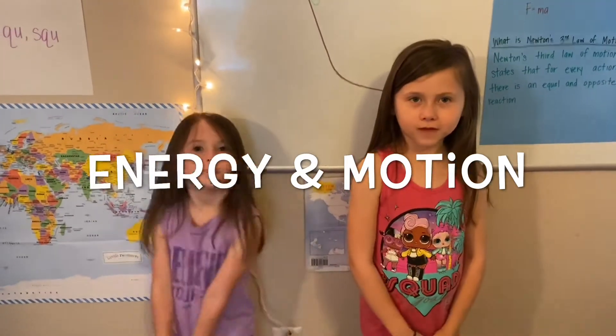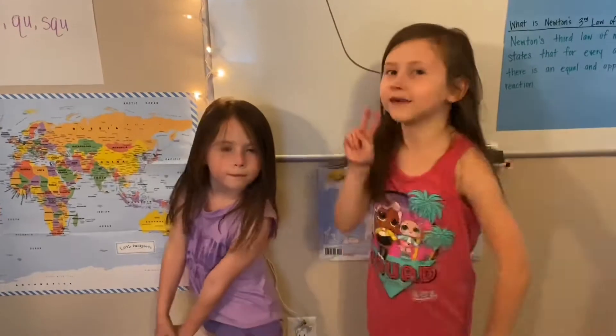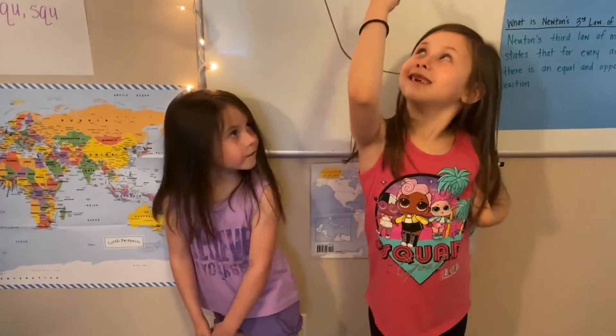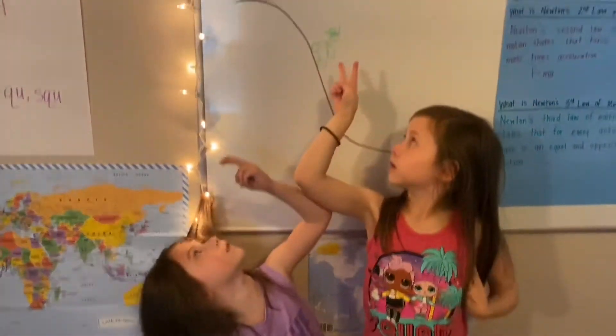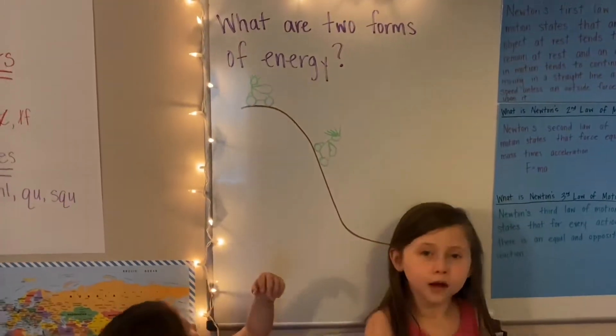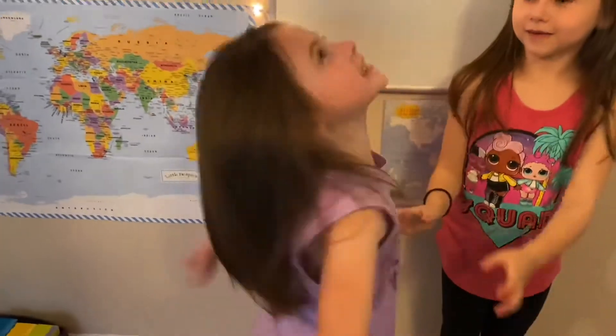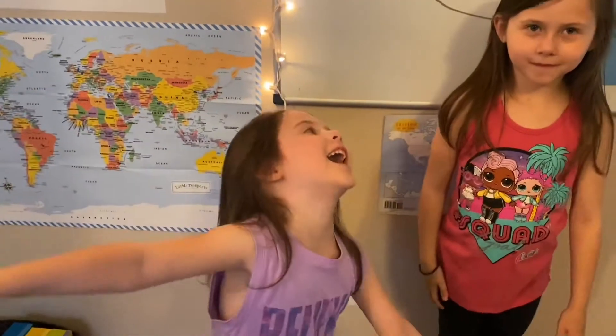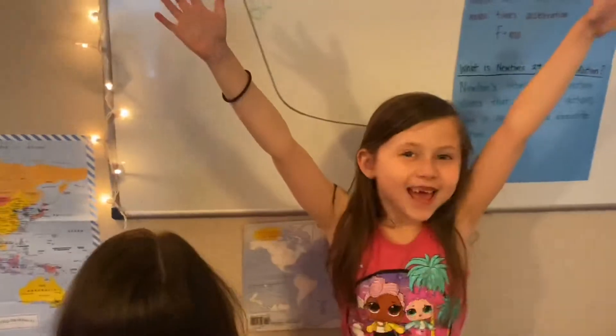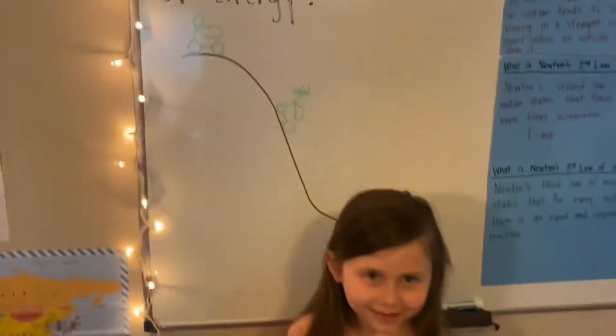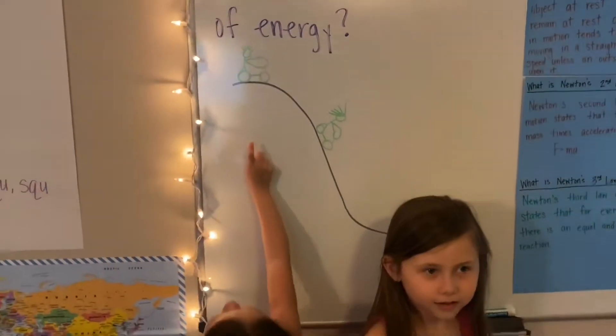Okay sisters, there are two of you and there are two forms of energy. What are they? What's the first one, Evie? Say it to the camera. Potential and kinetic.